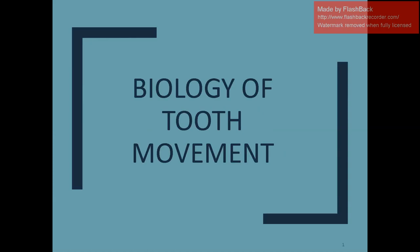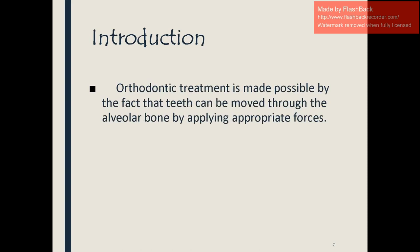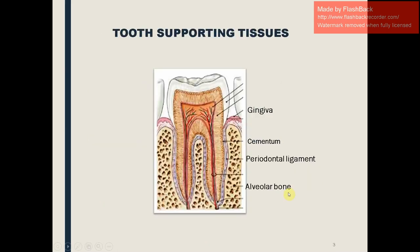Welcome to another topic in orthodontics: biology of tooth movement. The ability of independent tooth movement is unique to humans and mammals. Tooth movement is possible because of the presence of the periodontal ligament. Earlier, without the periodontal ligament, there was ankylosis — the tooth was fused to the bone with no movement. With evolution, the periodontal ligament appeared, enabling tooth movement through biological activities and bone remodeling. Orthodontic treatment is possible because when a prolonged force is applied on the tooth, bone remodeling occurs around the tooth, resulting in its movement.